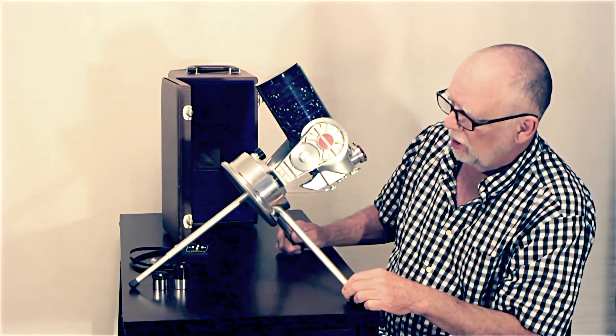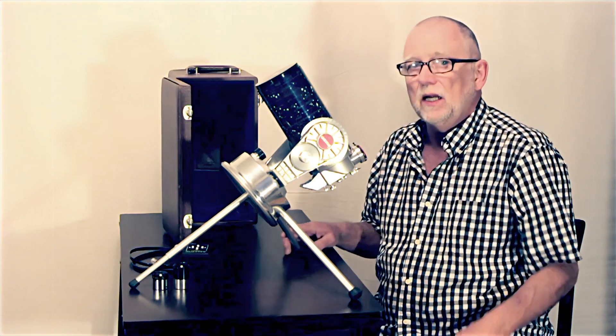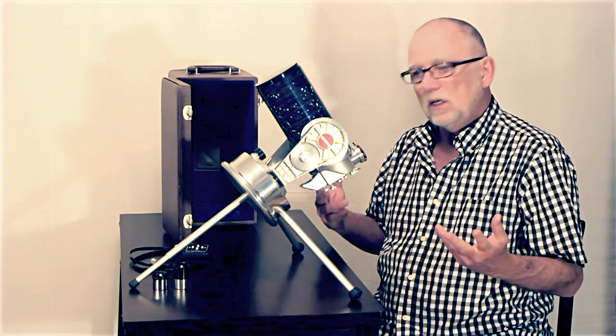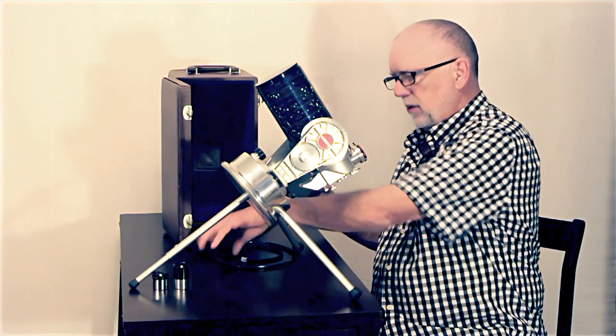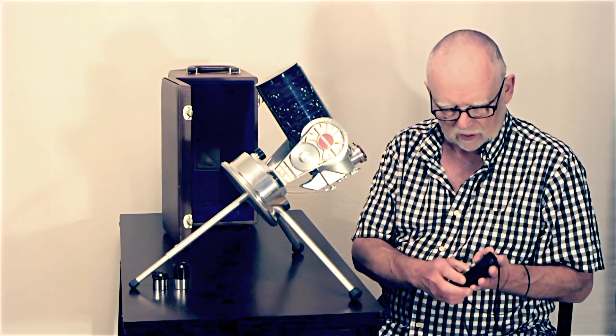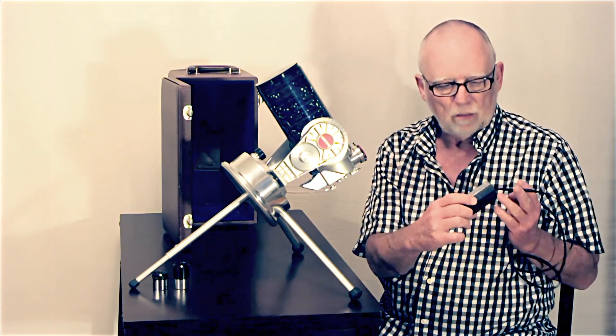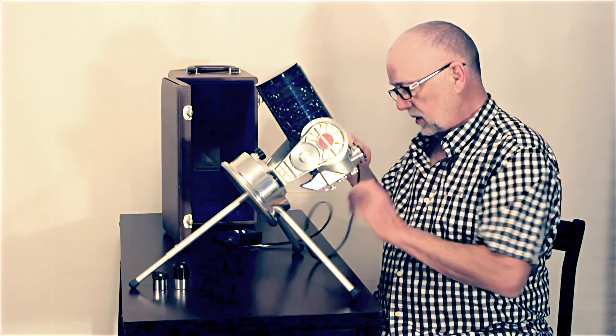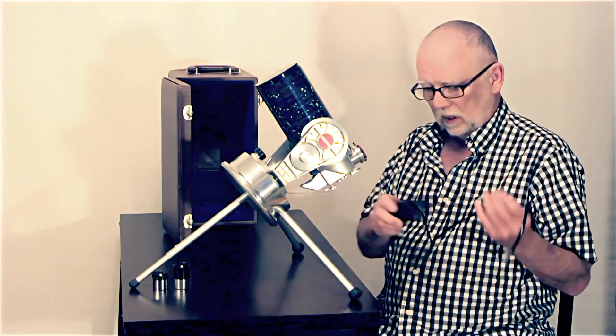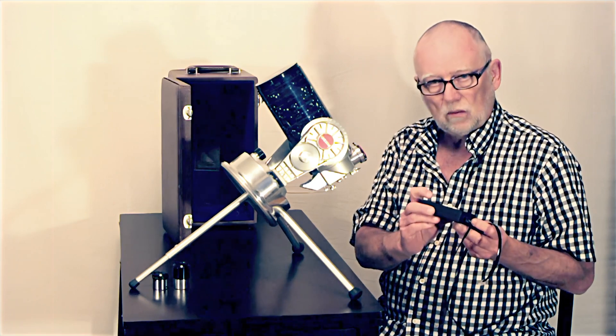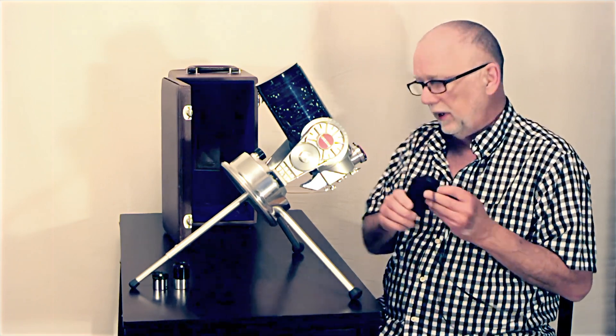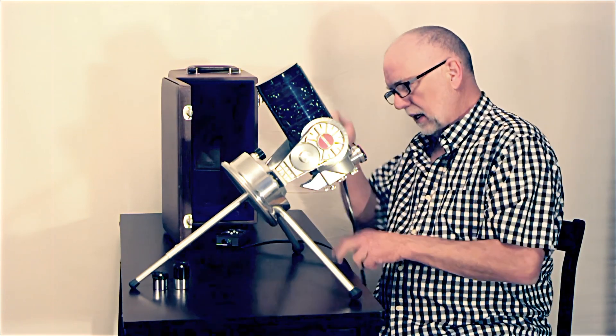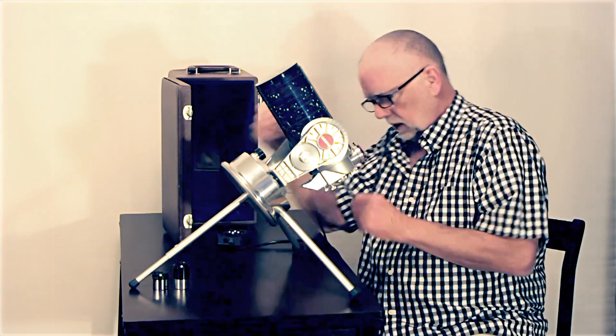Now this telescope in 1988 they made them with AC power. It has been updated with this Questar Power Guide 2. Very, very nice. This only needs a regular 9 volt battery to run this thing for many, many hours. This plugs in in the bottom here.